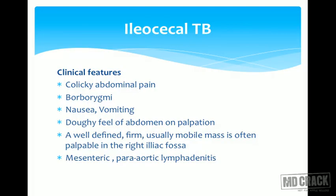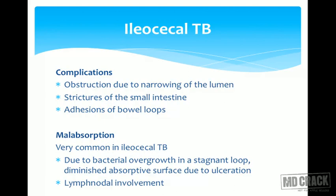In ileocecal tuberculosis, the abdominal pain can be colicky due to strictures at the ileocecal junction causing hyperperistalsis. Auscultation may reveal borborygmi. Patients have nausea and vomiting, and on palpation there is a classical doughy feel — a soft but doughy, mobile mass in the right iliac fossa. Mesenteric or para-aortic lymphadenitis is usually seen on ultrasound. Complications arise from obstruction due to the narrowed lumen from the stricture, presenting as subacute intestinal obstruction.